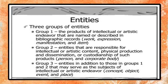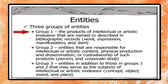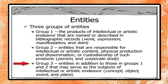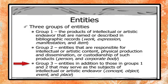FRBR identifies three groups of entities. Group 1 consists of products of intellectual or artistic endeavor named in bibliographic records: work, expression, manifestation, and item. Group 2 entities are person and corporate body — those directly related to the creation of Group 1 entities. Group 3 entities are the subjects of Group 1 entities, dealing with concept, object, event, and place.